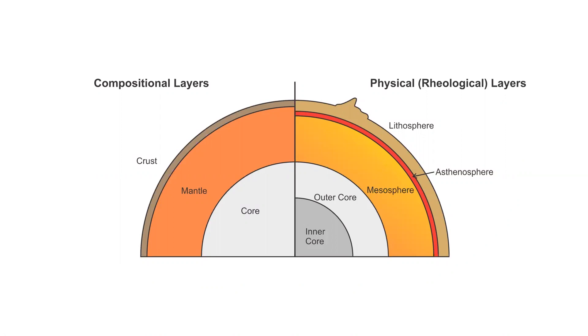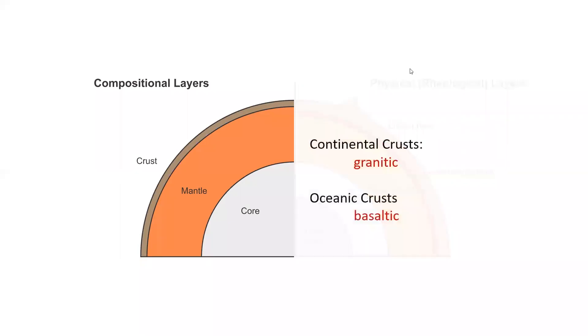The crust and lithosphere are further divided into continental and oceanic depending on the types of rocks and composition that made up those layers. Continental crust consists of rocks that have granitic compositions, whereas oceanic crust consists of rocks that have basaltic compositions.